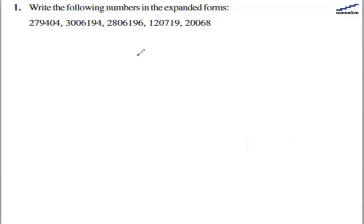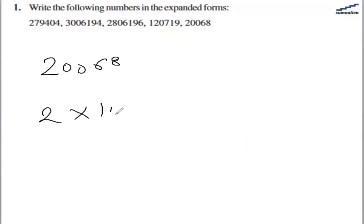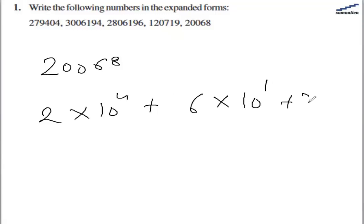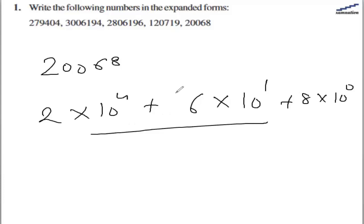In the last number we have 20068. So we have 2 multiplied by 10 raised to power 4, because there are 4 numbers after it — 1, 2, 3, 4 — so 10 raised to power 4. Then we have 6 times 10 raised to power 1, and 8 times 10 raised to power 0. So this will be the expanded format for this number.